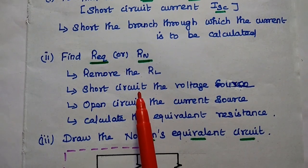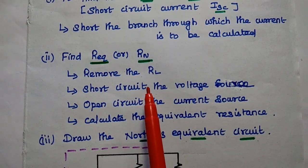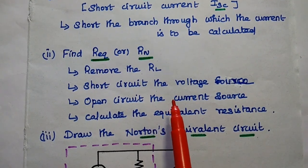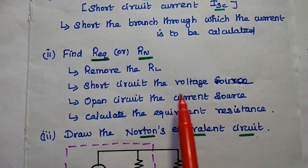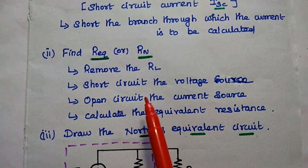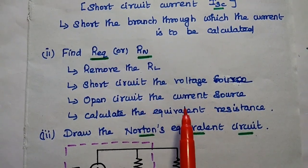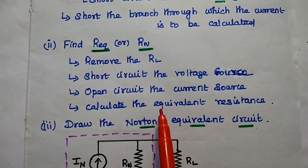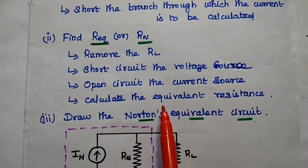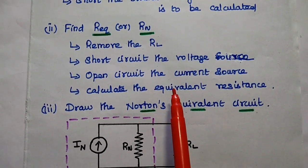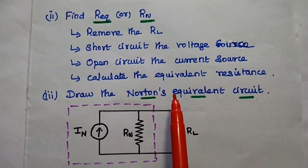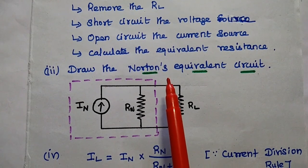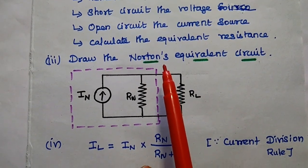To find Norton's resistance, we remove the load resistor from the given circuit and then inactivate all the sources. Voltage sources are short circuited, current sources are open circuited, and then we can calculate the equivalent resistance of the circuit — that is the Norton's resistance.